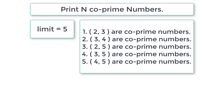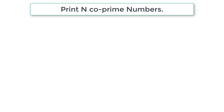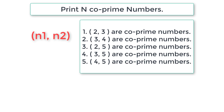Remember the first co-prime number, which is (2, 3). We'll use those as the initial values for num1 and num2. Please write it down - it will be helpful to understand the program. Note that these two numbers need not be prime numbers themselves.